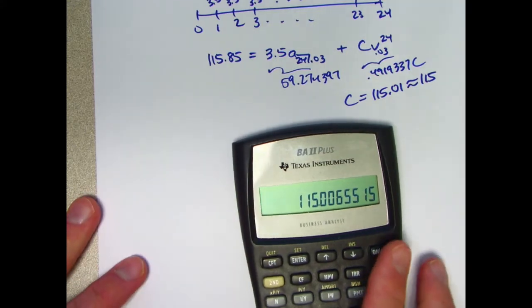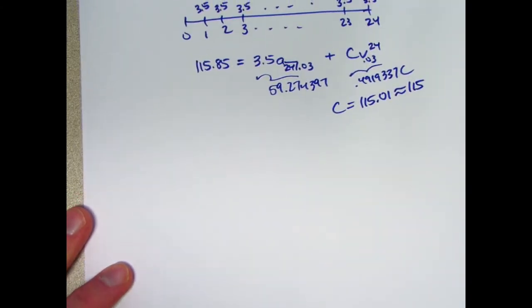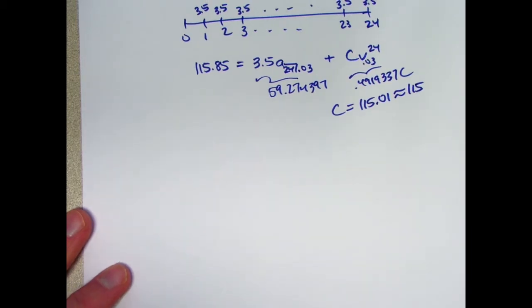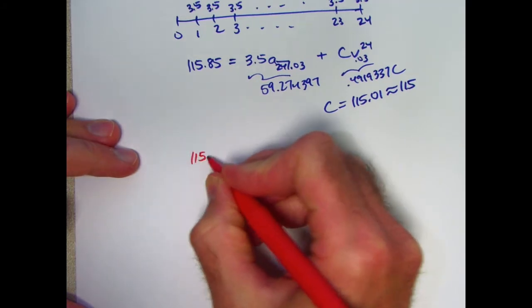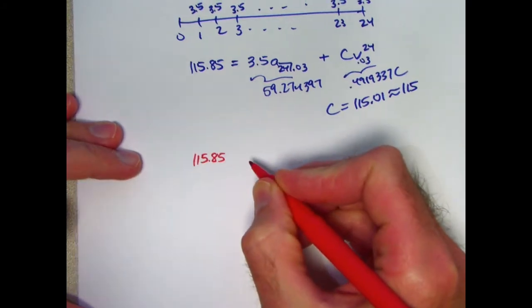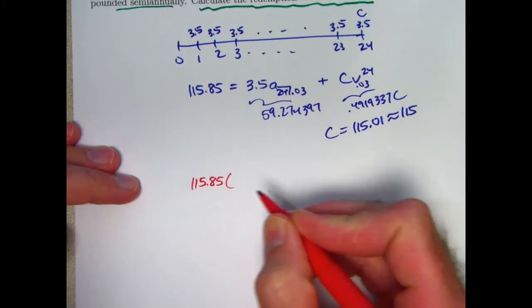All right, let's do this same problem with future values. Accumulative values, say at time 24, the future value of the price would be 115.85 times the, again, the yield rate is 6% as a nominal annual rate compounded semi-annually, so the semi-annual rate is 3%.